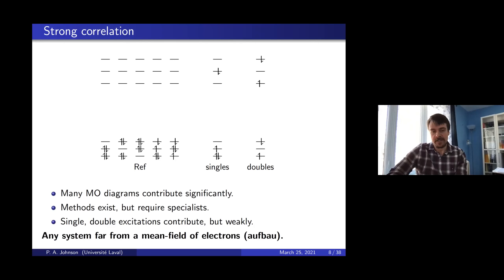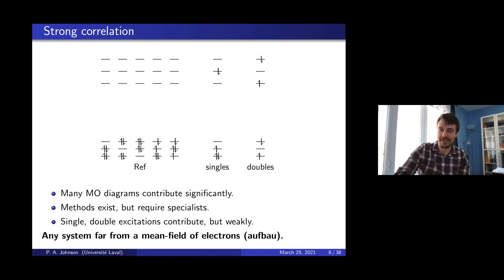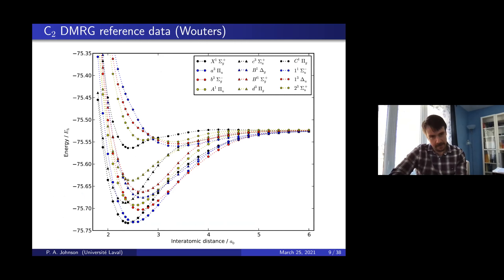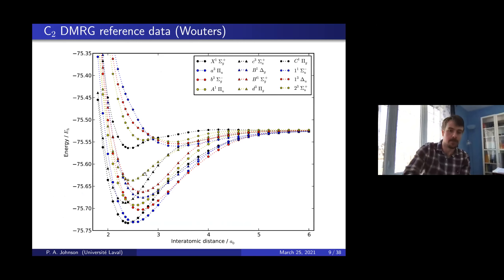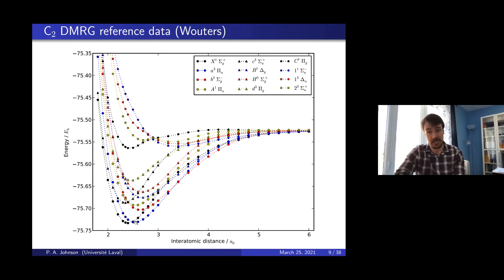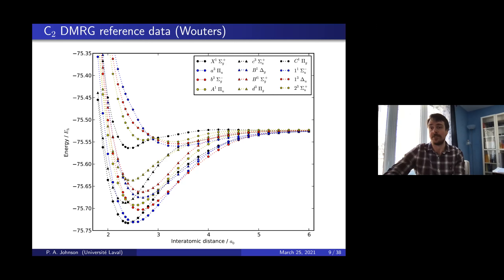Strongly correlated systems are anything not just describable as independent electrons. One of these systems we look at is carbon-2. It is a very complicated system — it's not a productive question to ask how many bonds there are. At equilibrium it's okay, but even a little past equilibrium it changes, and in the middle — at dissociation — it is complicated. This is a very difficult problem and one of the model systems we would like to treat very well.